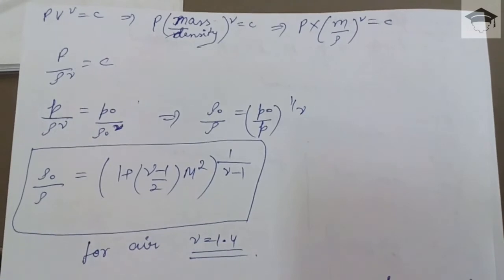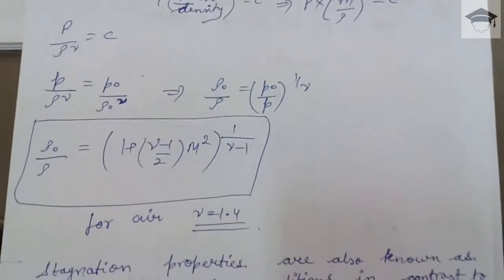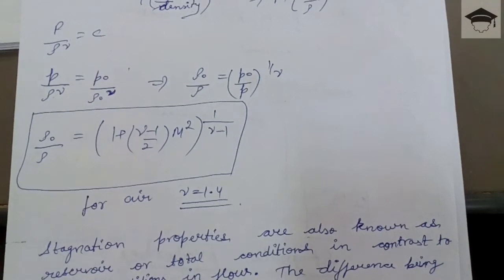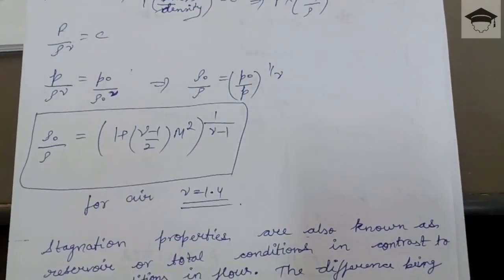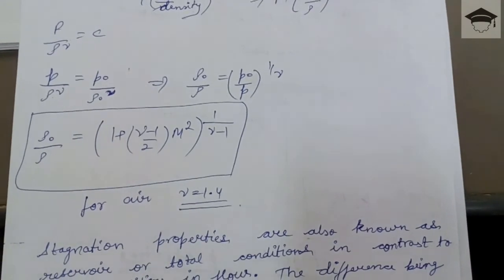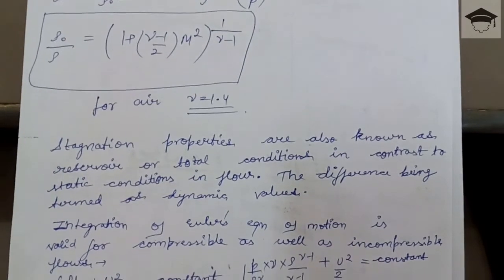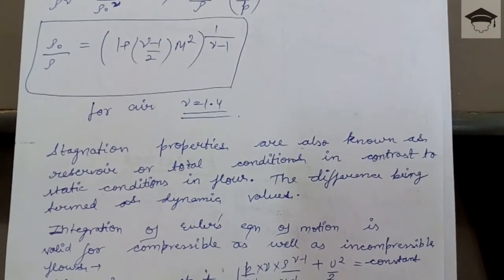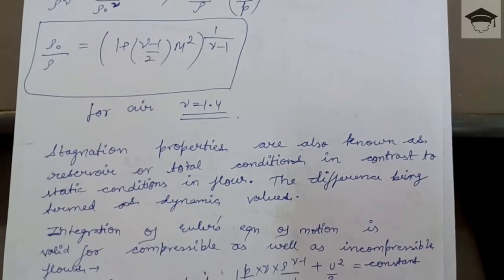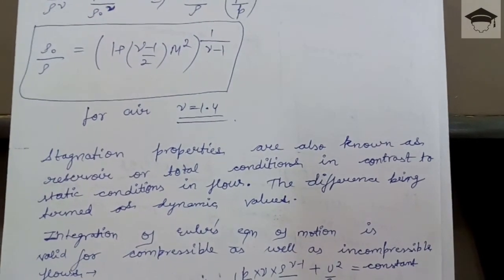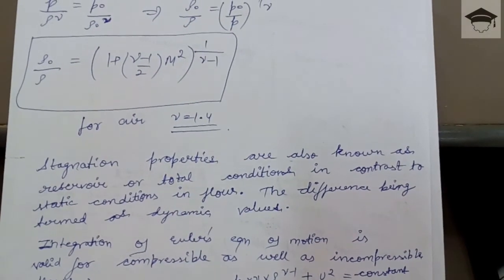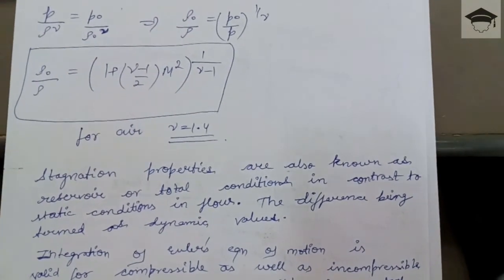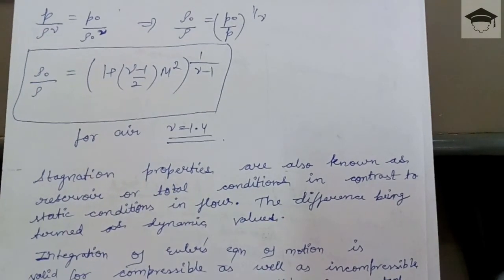For air, γ = 1.4, which you can substitute into the above equations — only the Mach number is needed. For other fluids like glycerin or kerosene, a different γ applies. Stagnation properties are also known as reservoir or total conditions, in contrast to static conditions. The difference is termed dynamic: stagnation minus static equals dynamic, so h₀ − h = u²/2.